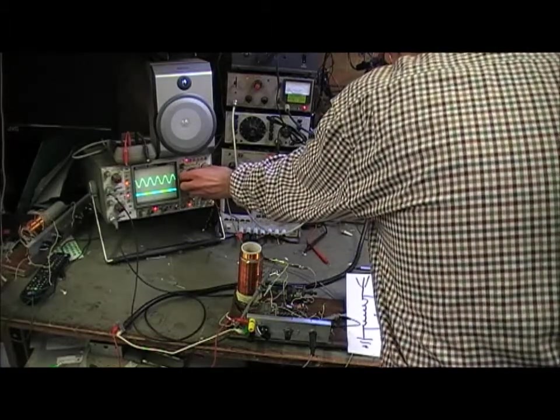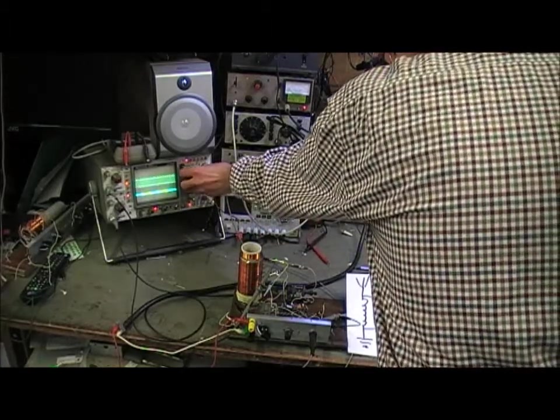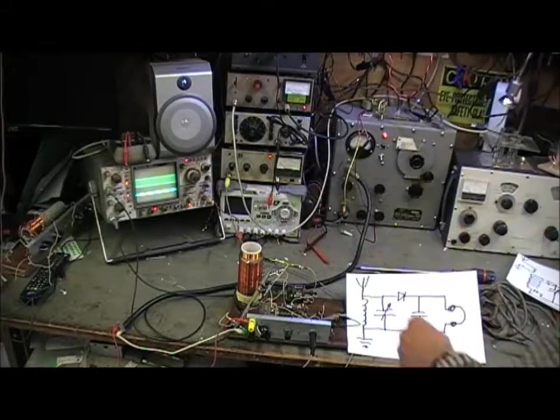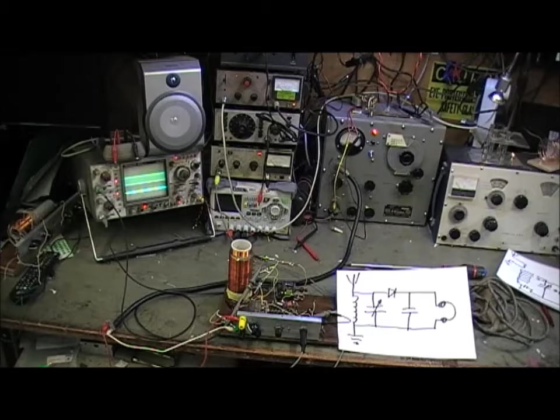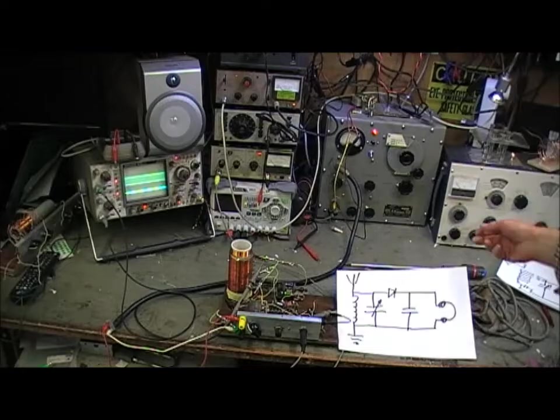So that's the carrier, as they call it. But not much use unless you do something with it. You can turn it on and off for morse code, or digital. But one way, and the earliest way of doing this, was to change or modulate the amplitude. In fact, AM stands for Amplitude Modulation.